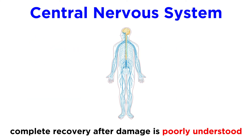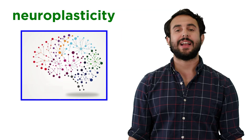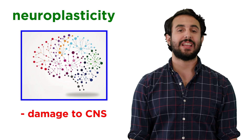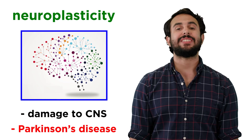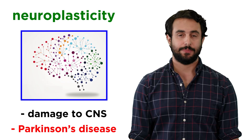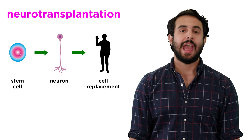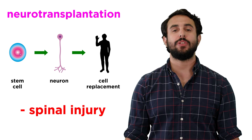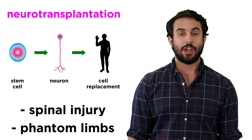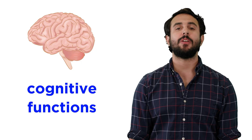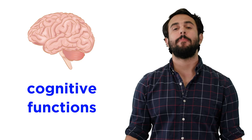Lastly, we can sometimes see complete recovery of function after damage to the central nervous system, although this remains poorly understood. Neuroplasticity is an exciting phenomenon, and current studies are helping us determine ways to treat damage to the central nervous system in humans, as well as innovate treatments for things like Parkinson's disease. We are examining possibilities surrounding neurotransplantation and other cutting-edge technologies that will help us treat spinal injury, phantom limbs, and other conditions. But before we get to that, let's dive into some cognitive functions so that we can get a better understanding of human psychology from a biological standpoint.